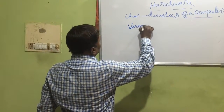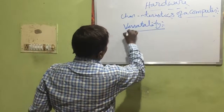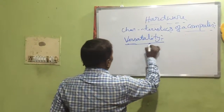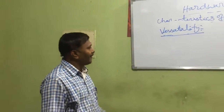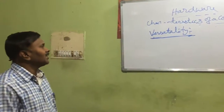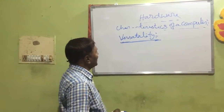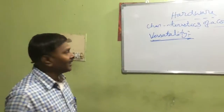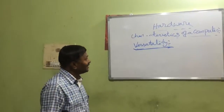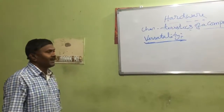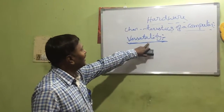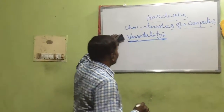Next is versatility. A versatile person is someone who is expert in many fields. In the same manner, versatility for a computer means computers are used everywhere — in banks, colleges, schools, education departments, science and technology, and even in kitchens nowadays. So the computer has the feature of versatility, meaning it can be used everywhere. That is about versatility.